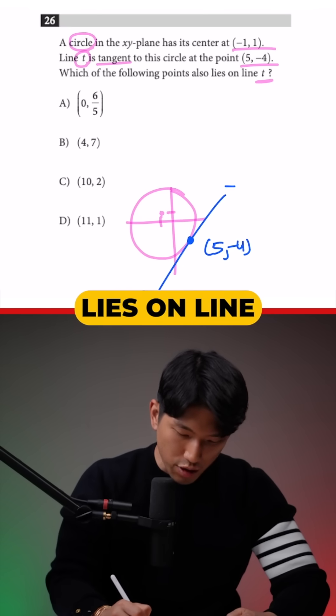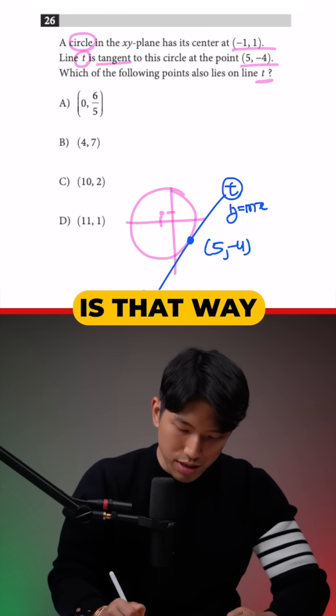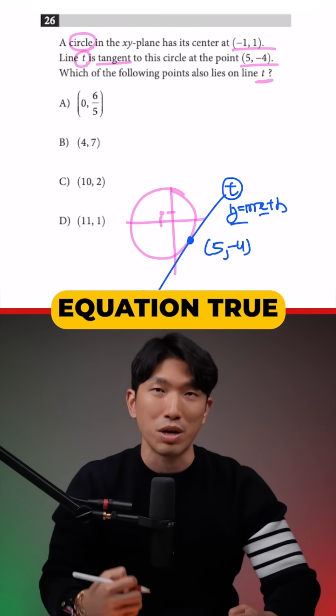To see which coordinate lies on line T as well, we have to first find out what the equation is. That way we can plug in the coordinate and see which one makes the equation true.